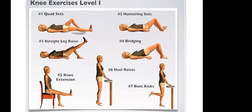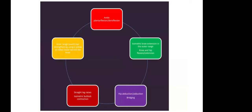Level 1 home exercises include quadriceps sets, hamstring sets, SLR, bridging, knee extension, heel raises, and buttock kicks — for activation and strengthening of quadriceps, hamstrings, gluteus maximus, knee extensors, and calves. Calf raises ensure proper pumping and prevent tightness in the calf and hamstring. Specific exercises include ankle plantar flexion and dorsiflexion (ankle pumps), isometric knee extension in outer range, knee and hip flexion-extension, bridging, hip abduction and adduction, straight leg raises, isometric gluteal contraction, and inner range quadriceps strengthening using a pillow or towel behind the knee.